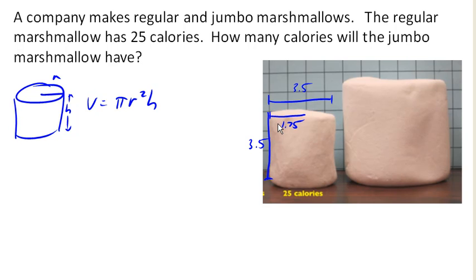Okay, so for the regular size, we have a volume of pi times 1.75 squared times 3.5 is about 33.7 units cubed, or cubic units.